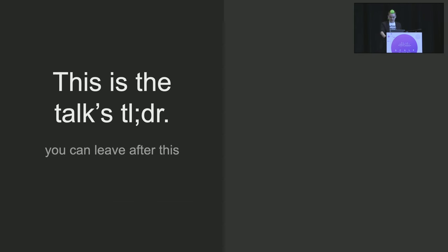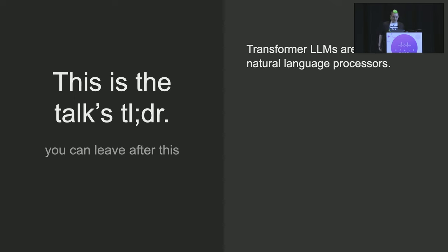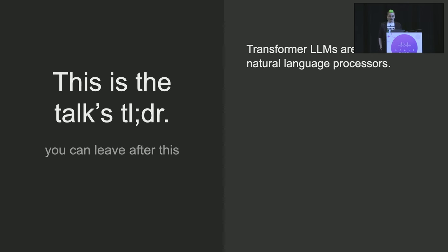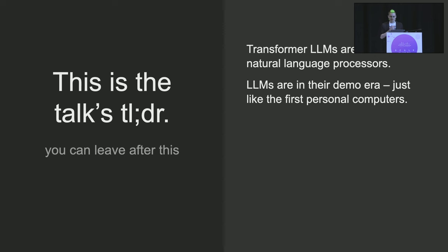So what's the TLDR, what are we going to cover here? There's been a lot of excitement about transformer-based large language models in the last year. A lot of people have been claiming they're a software 3.0, a new type of computer. That can be made a little bit more rigorous — they are differentiable natural language processors.